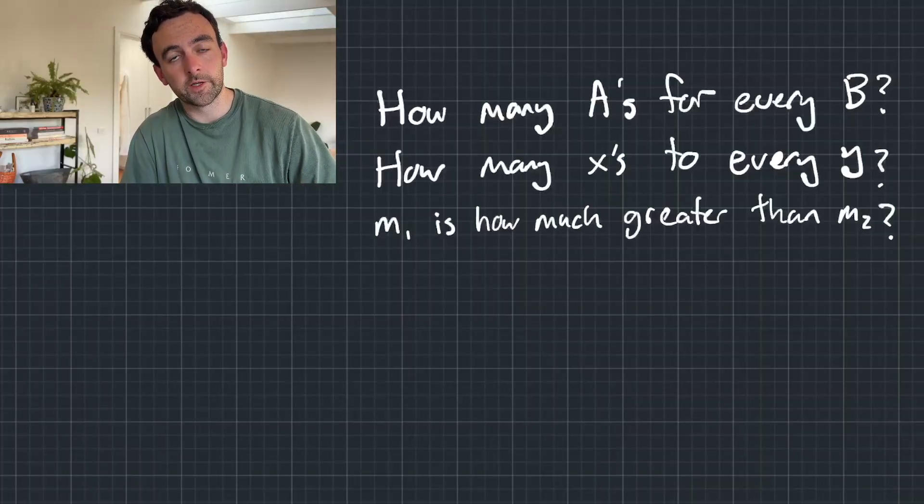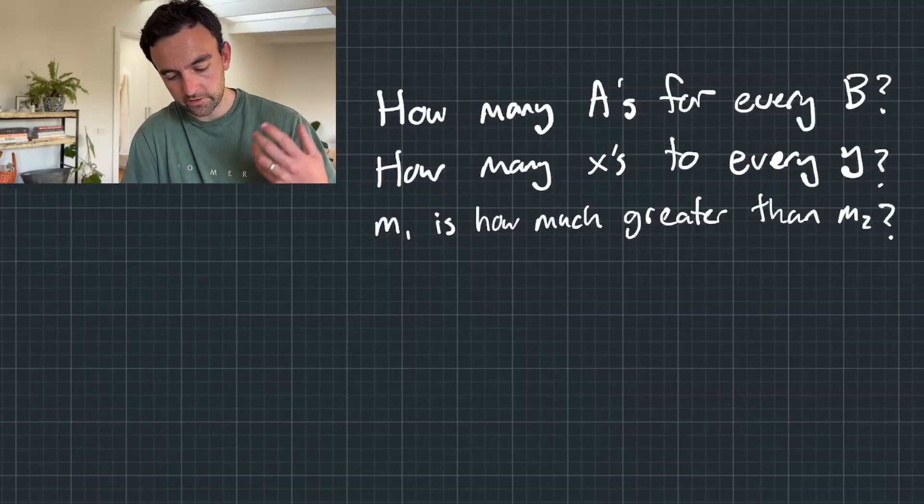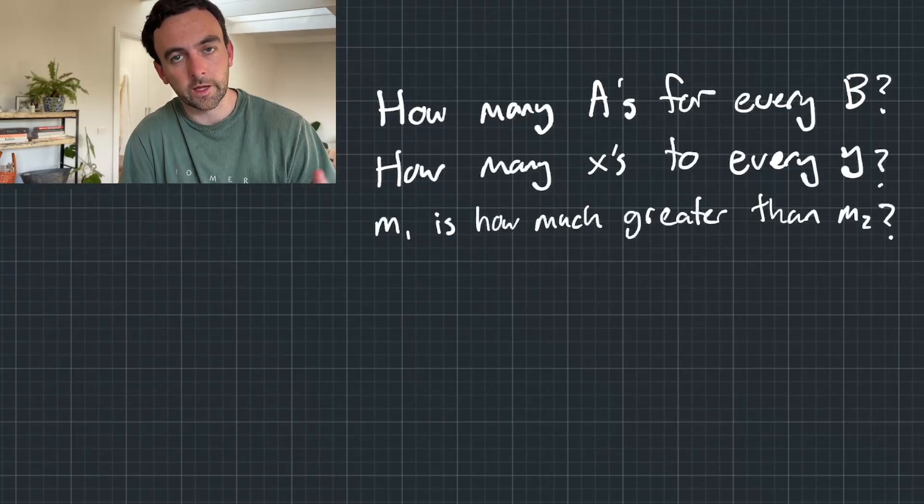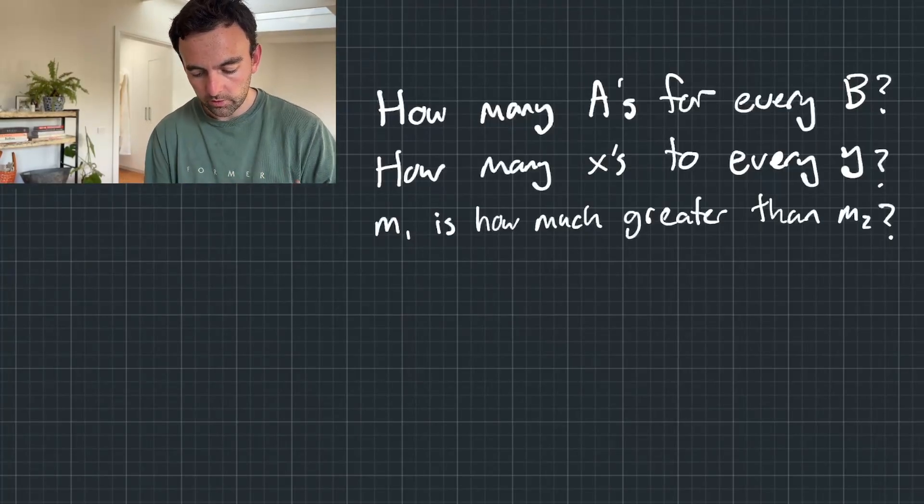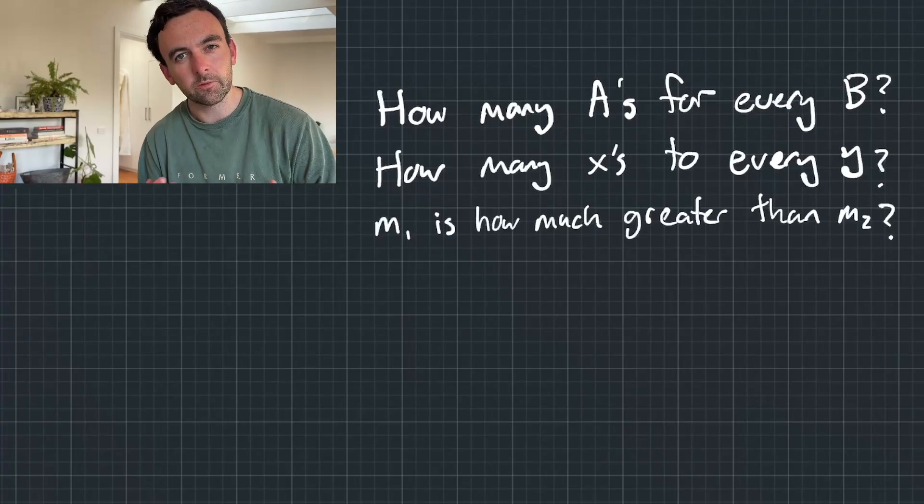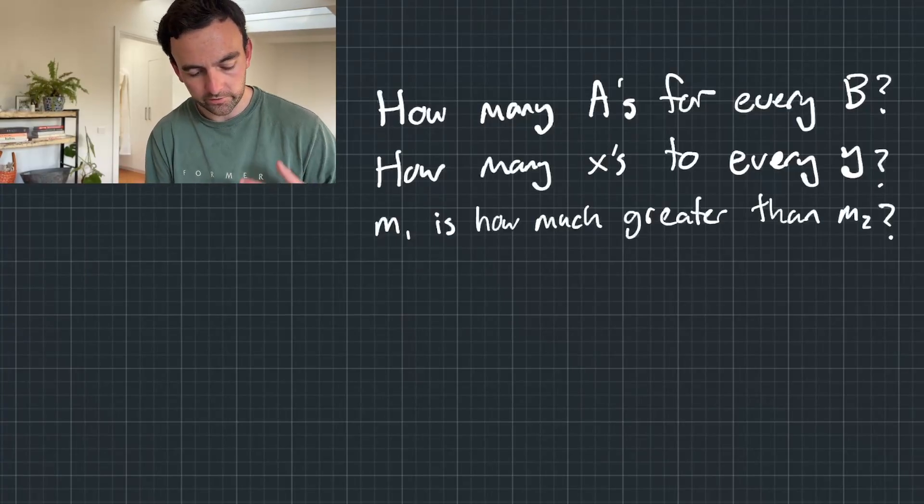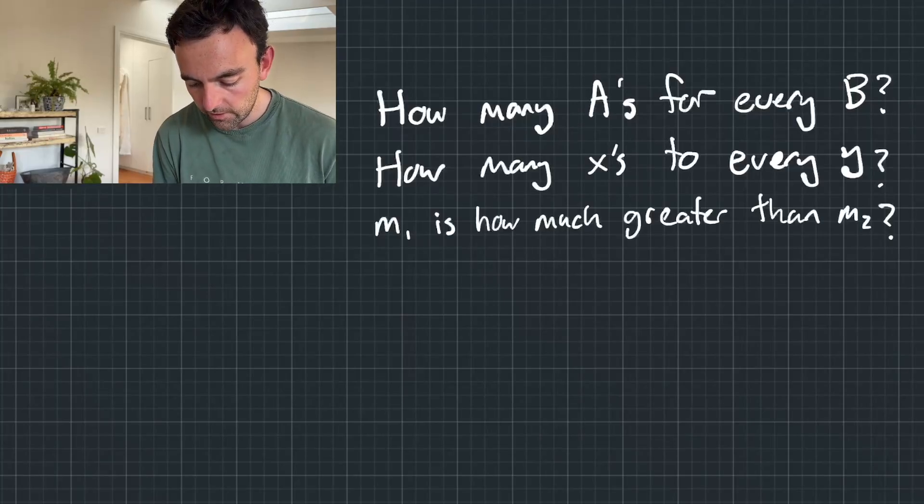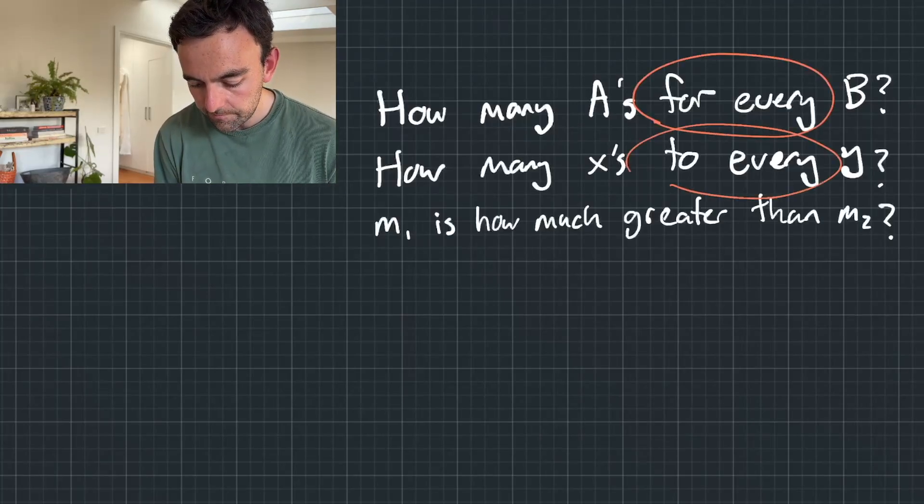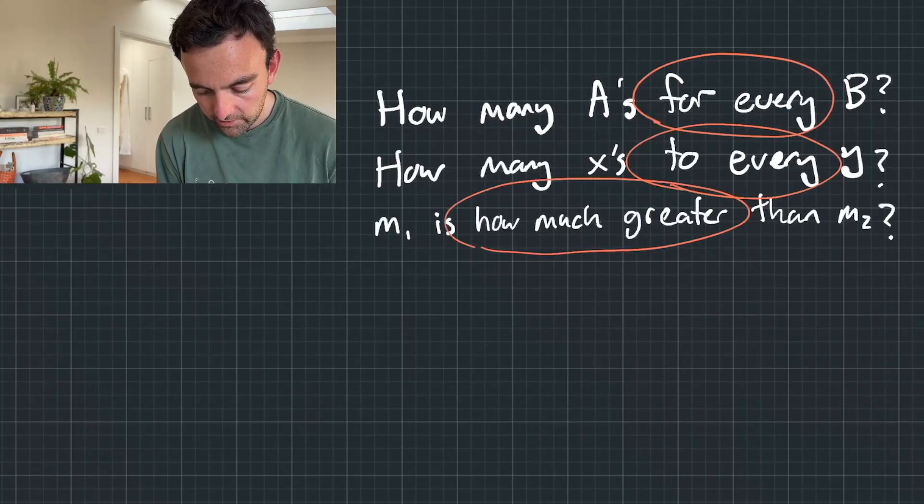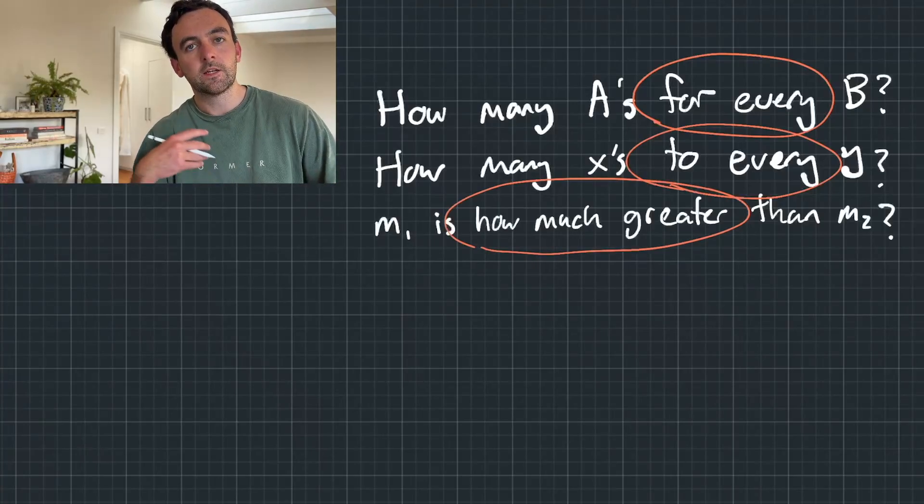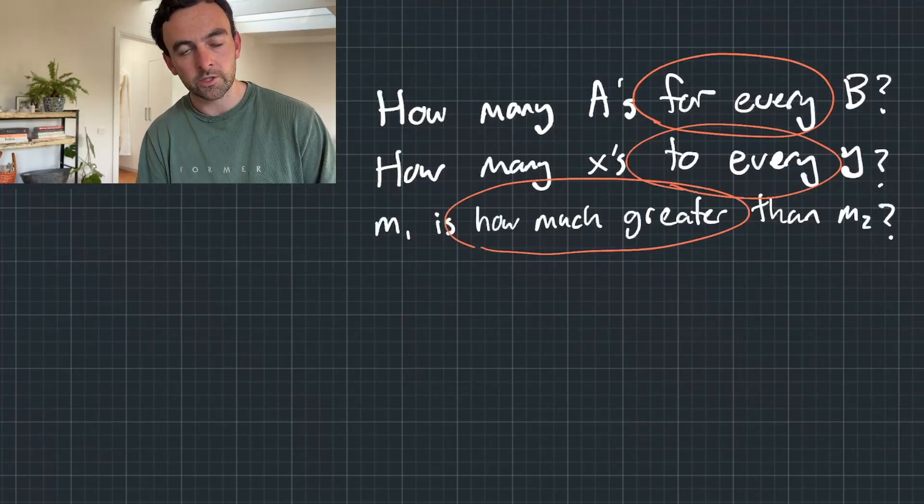Before we can solve any ratio problems, I think it's good to get a handle on what they look like. All of these questions that I've written are ways that you might see ratios and how they're going to present themselves in the GAMSAT. Things like for every, how much greater, are implying that you might need to use a ratio.